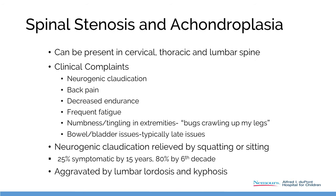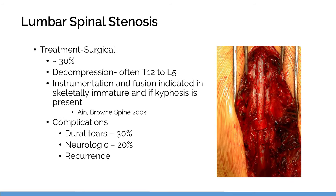Spinal stenosis is symptomatic in 25% by age 15 and 80% by the sixth decade — a significant impact on function and quality of life. Treatment when symptomatic is decompression; if there is sagittal malalignment, you need to instrument and fuse. This is a complex procedure — the dura is always under pressure, so it's paper thin, it tears, it's hard to repair. It's a tough operation.